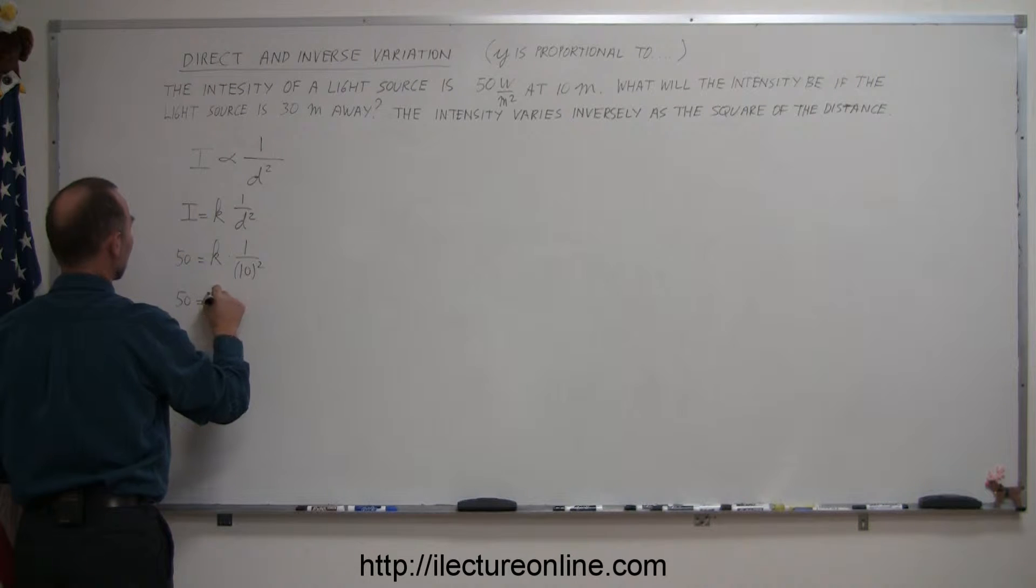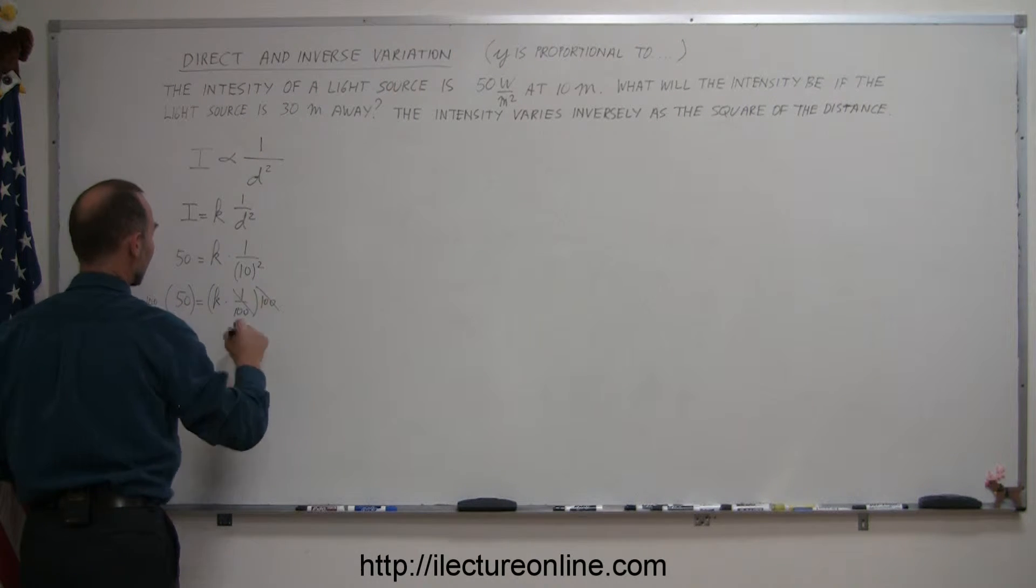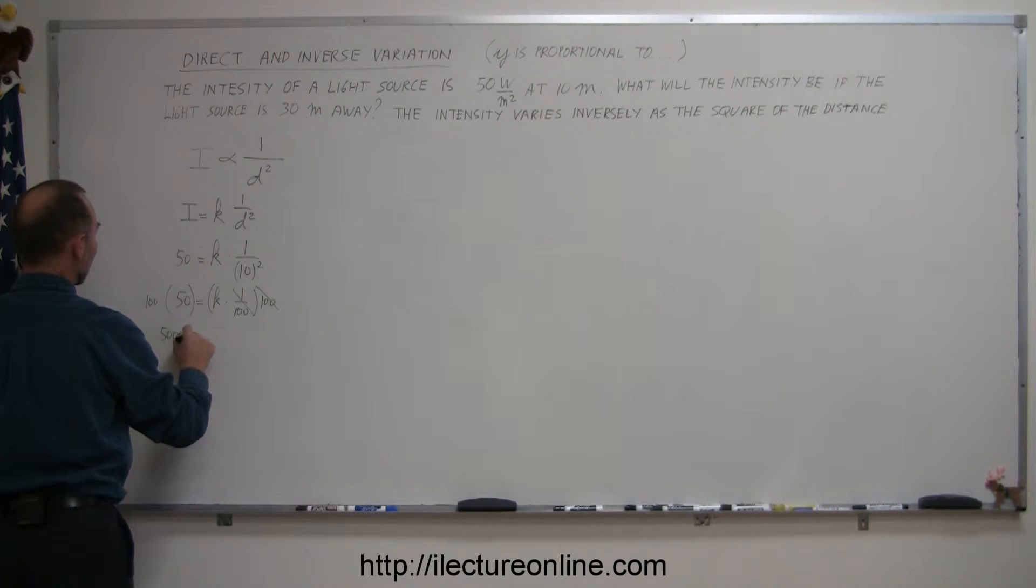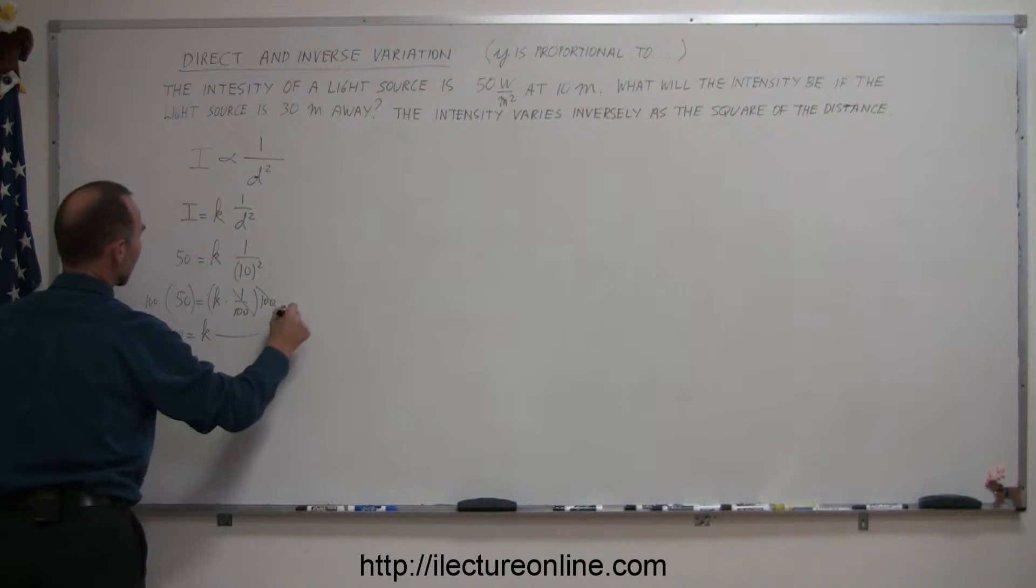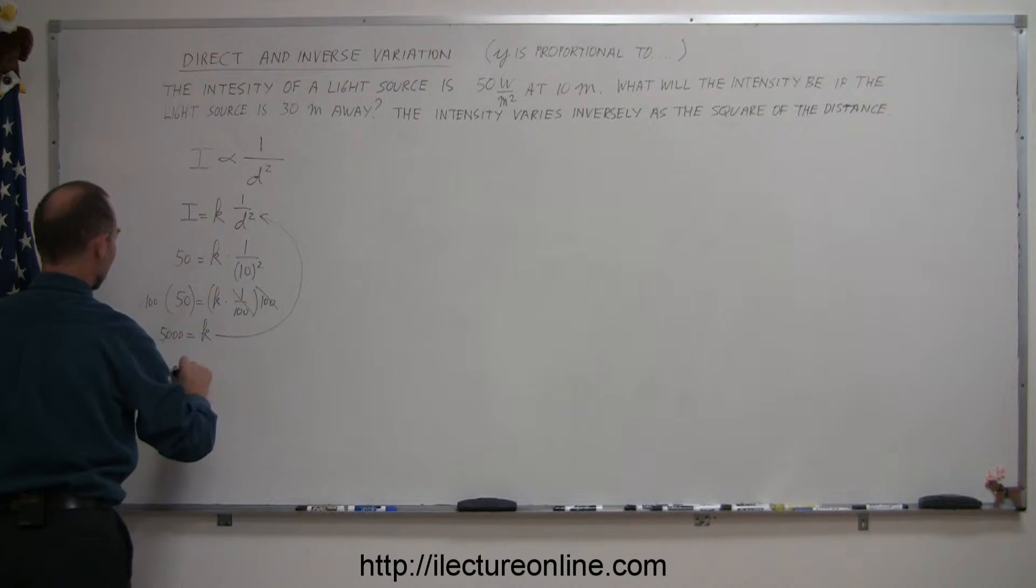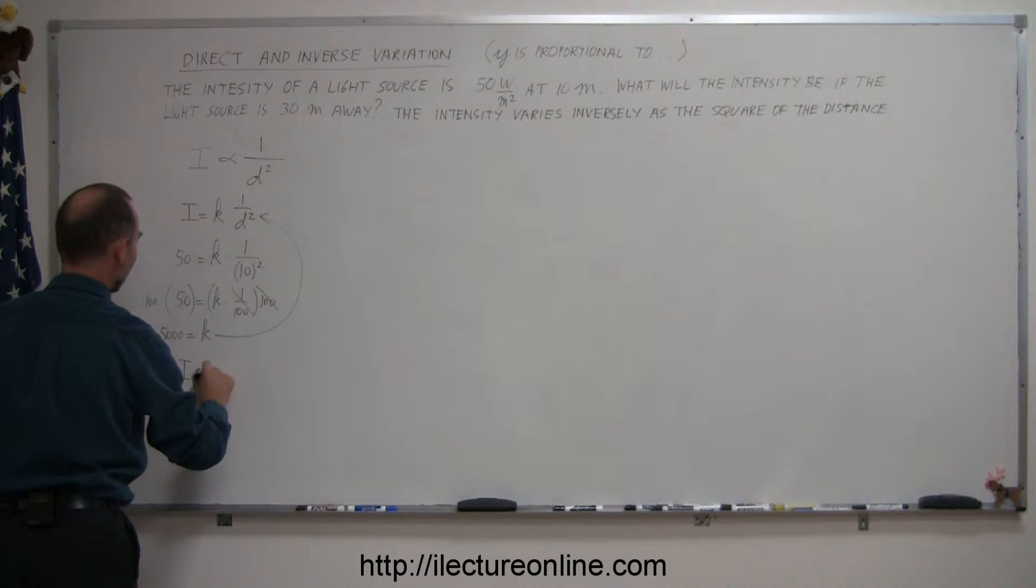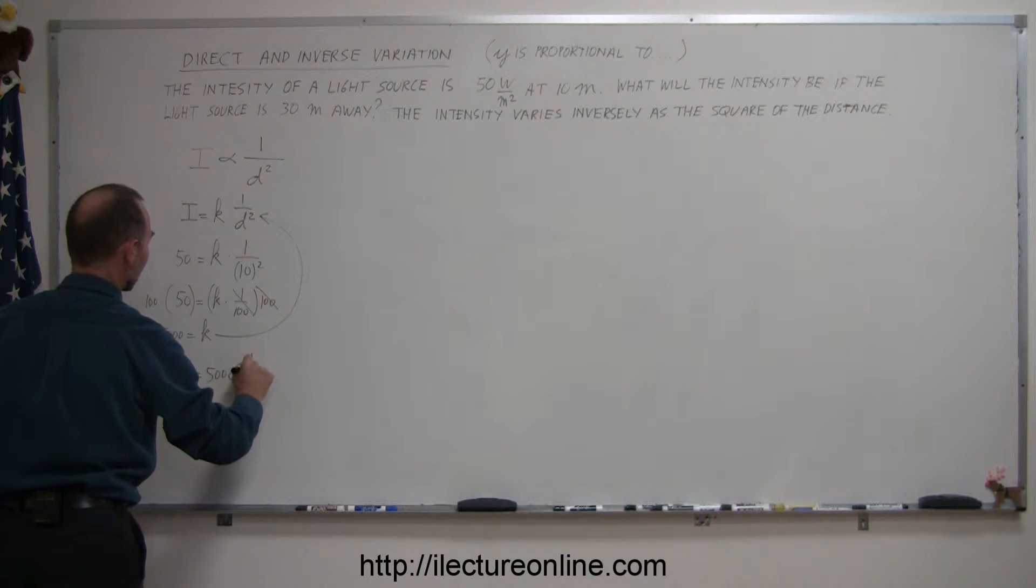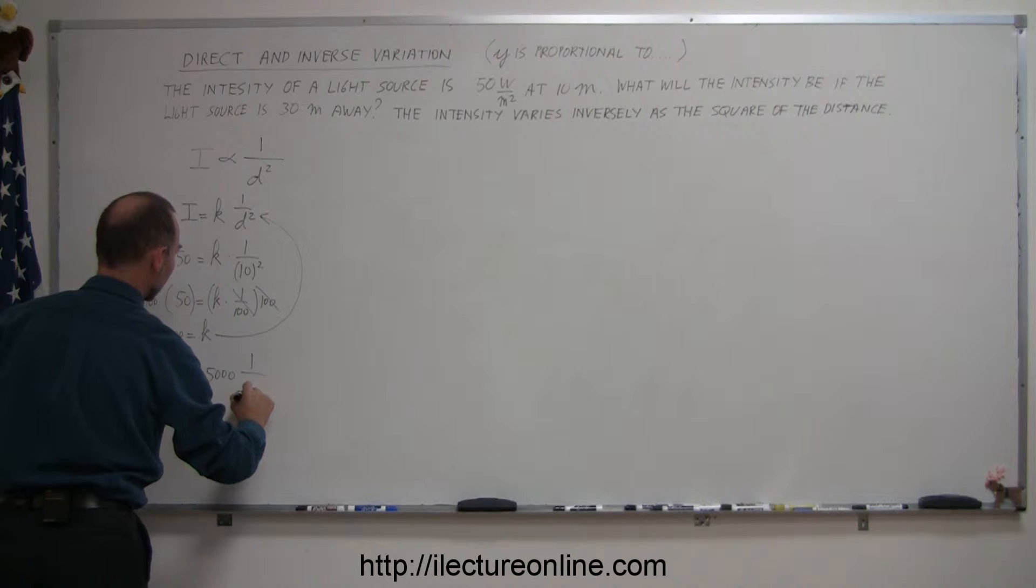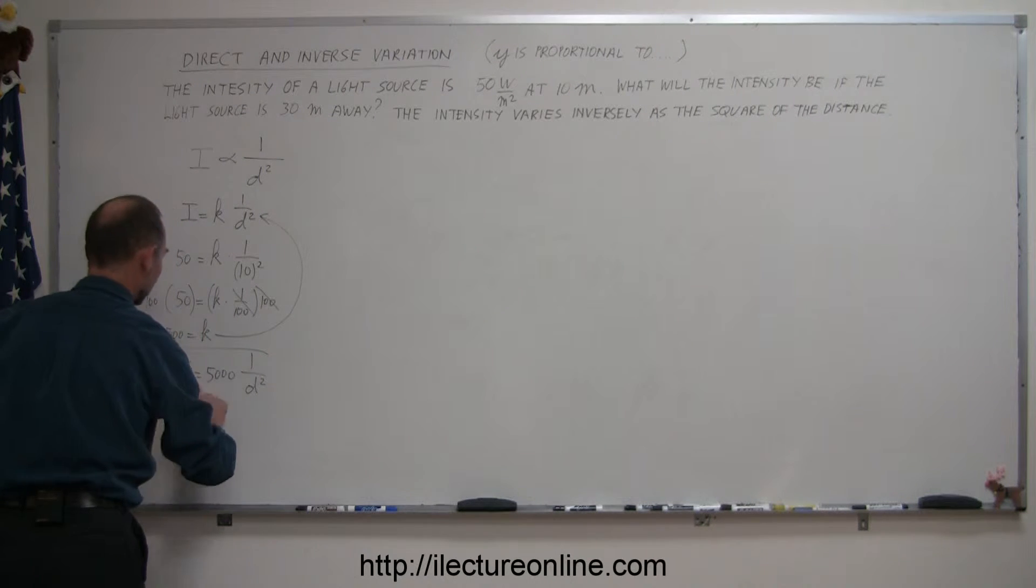Simplifying that, we have 50 is equal to k times 1 over 100, and then if we multiply both sides by 100, this will cancel out, and we end up with 5000 is equal to k. And when we plug that back into the equation, we can now say that the intensity is equal to 5000 times 1 over the distance squared, d squared. There's our equation.